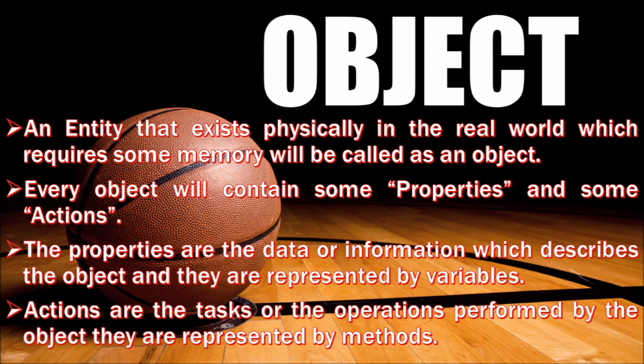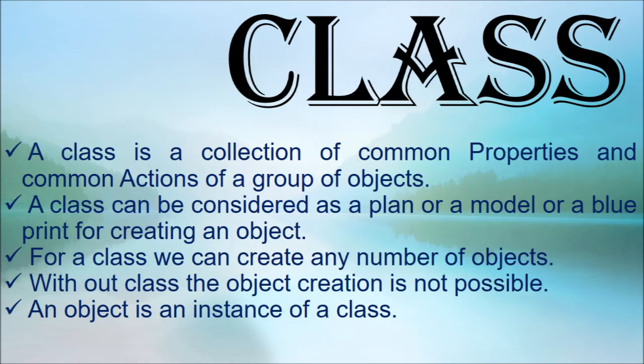Properties are the data or information. So the object is related to data and information. We use properties and actions. Actions are the tasks or operations performed by an object. So, to summarize: an object has properties and actions.